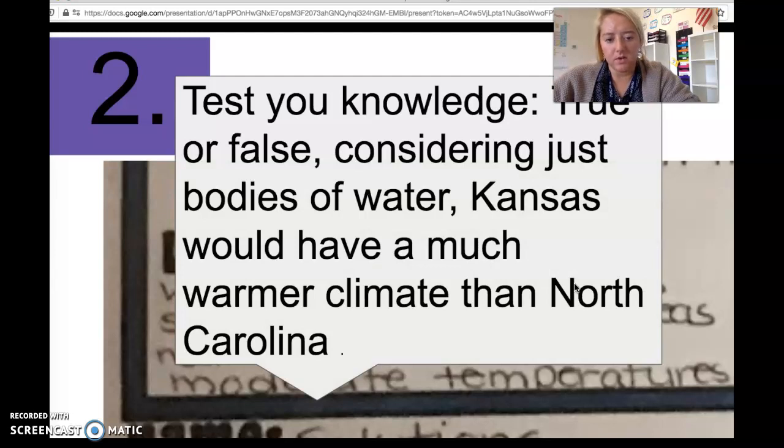Test your knowledge again: true or false, considering just bodies of water, Kansas would have a much warmer climate than North Carolina. We should know this as false. Kansas will be colder, or more—less stable. They will have higher highs and lower lows than North Carolina. So this is actually a trick question right here. Our climate in North Carolina is more stable. We have moderate temperatures. There's not that much of a difference between our summer and our winter as compared to Kansas, where they have feet of snow in the winter and nice green 80-90 degree days in the summer.